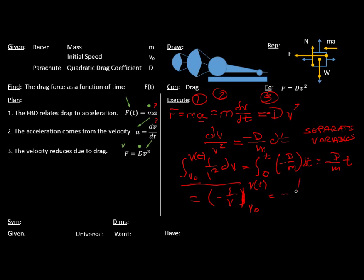that's evaluated at v0 and v(t). So we get minus one over v(t), minus minus one over v0. Okay. And then we do math, and then we do math.